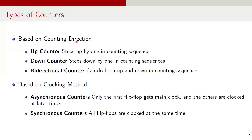Counters can be classified based on two primary criteria: based on direction and based on clocking method. Based on direction, the up counter increments the count, the down counter decrements the count, and the bidirectional counter, also known as the up-down counter, can do both incrementing and decrementing. Counters can also be categorized based on how the clock signal propagates through the circuit: asynchronous counters and synchronous counters.